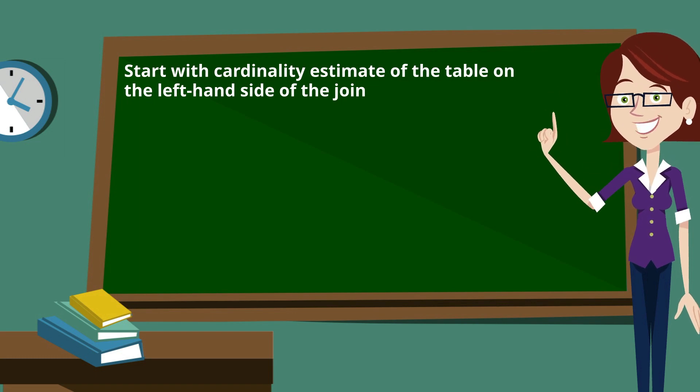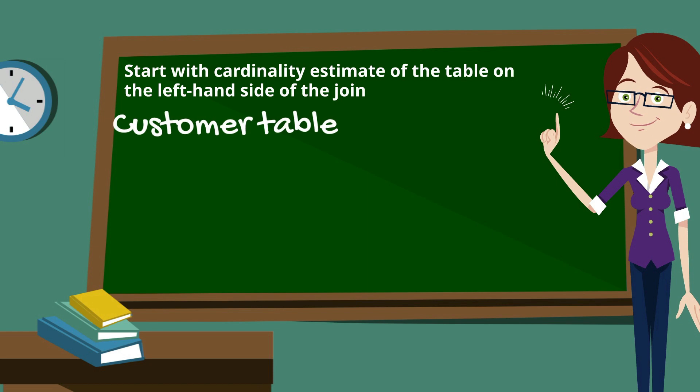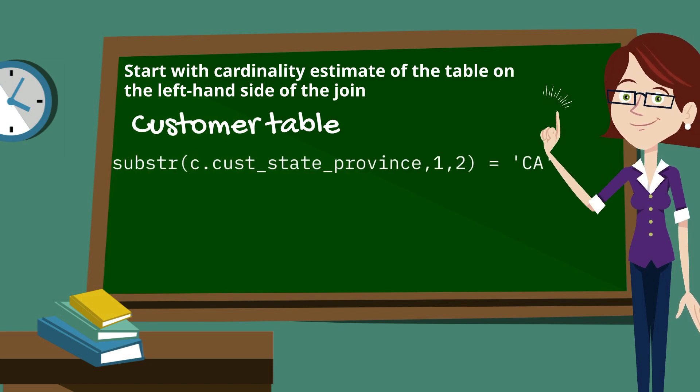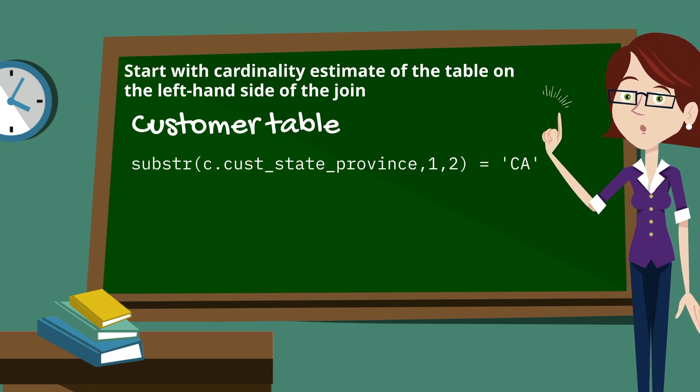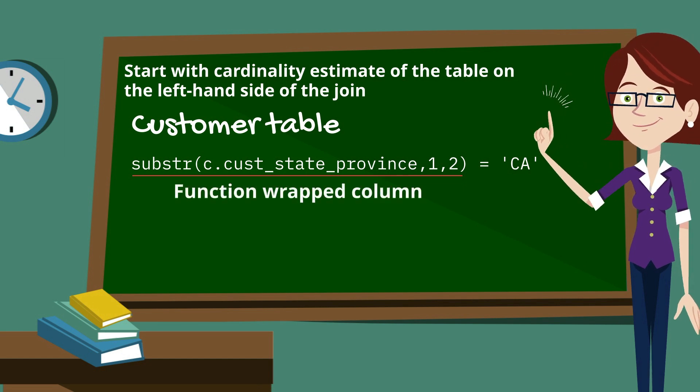Well, when you're looking at cardinality estimates influencing a join, you want to start with the table on the left-hand side. And in this case, that's the customers table. Now we do have a where clause predicate on the customers table, and you'll notice there that we're wrapping a function around the cost state province column.